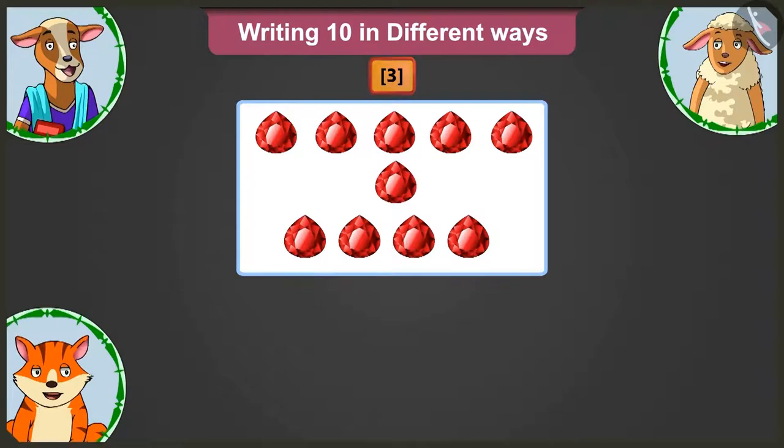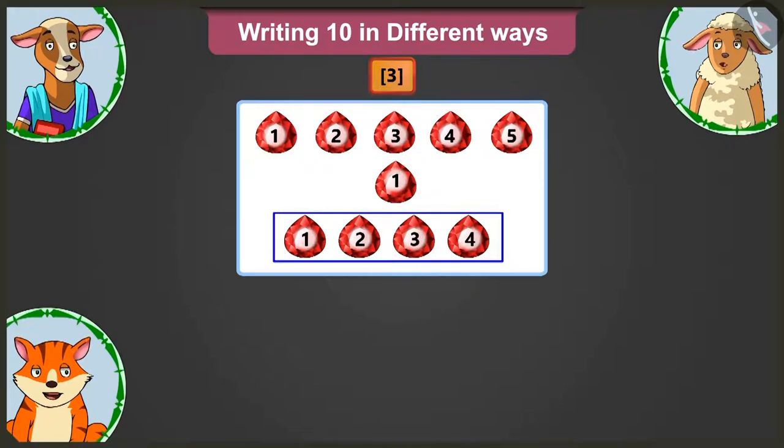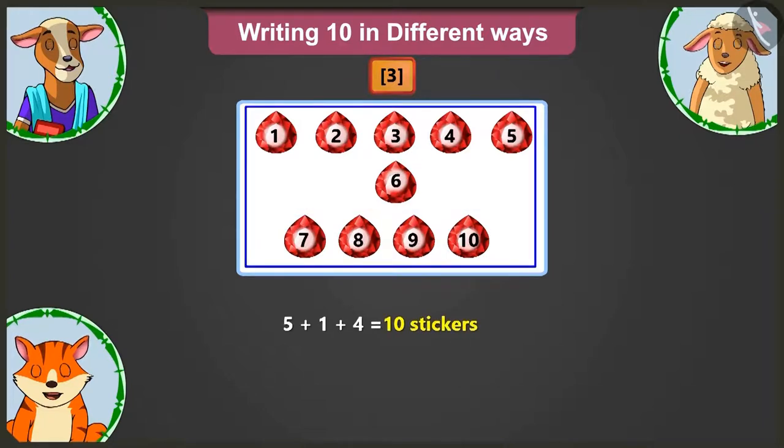Well done, Billy. Lily, now you tell me. How will we write the sum of 10 here? In this card, there are 5 in the first row, 1 in the second row and 4 stickers in the third row. So here, we will write 5 plus 1 plus 4 to make 10 stickers.